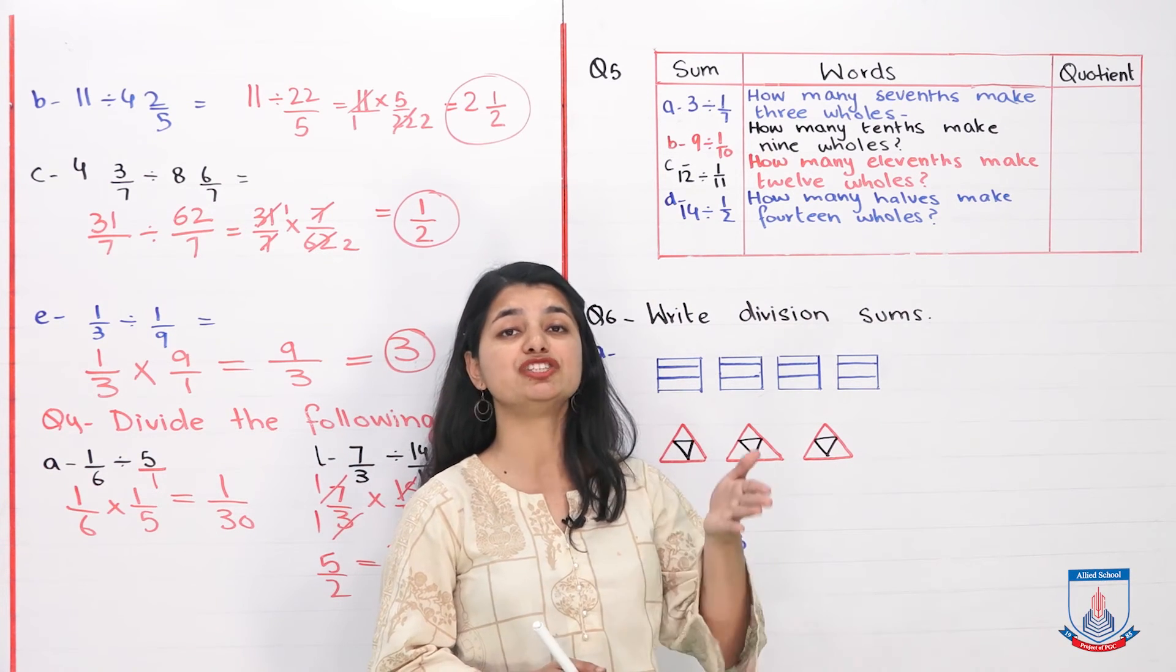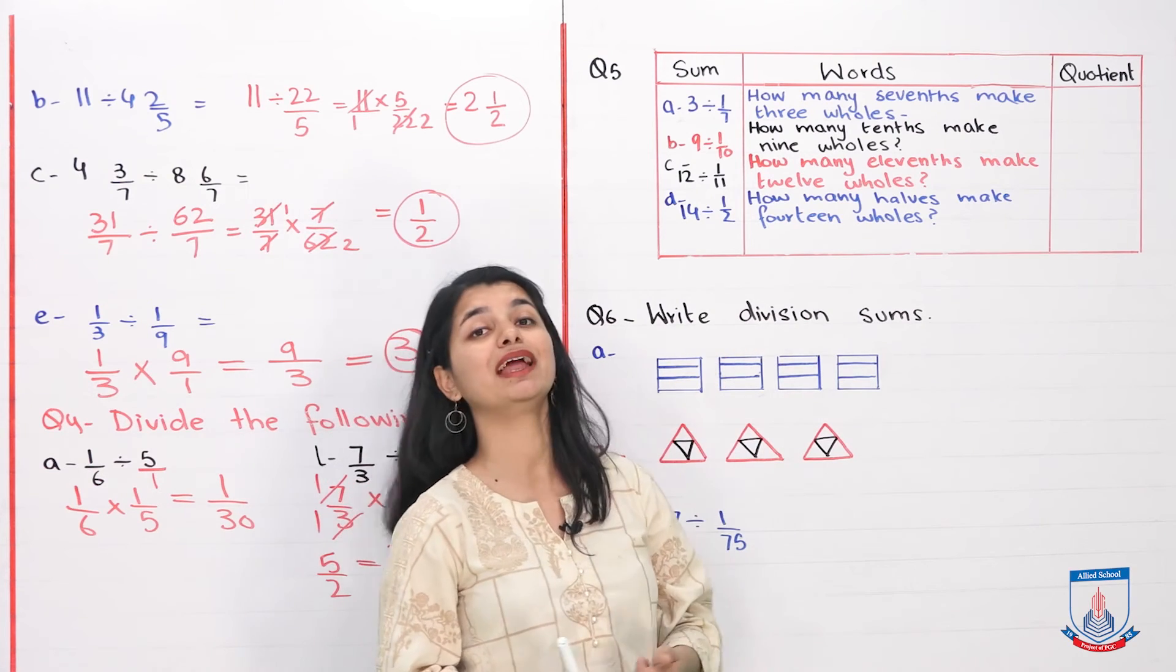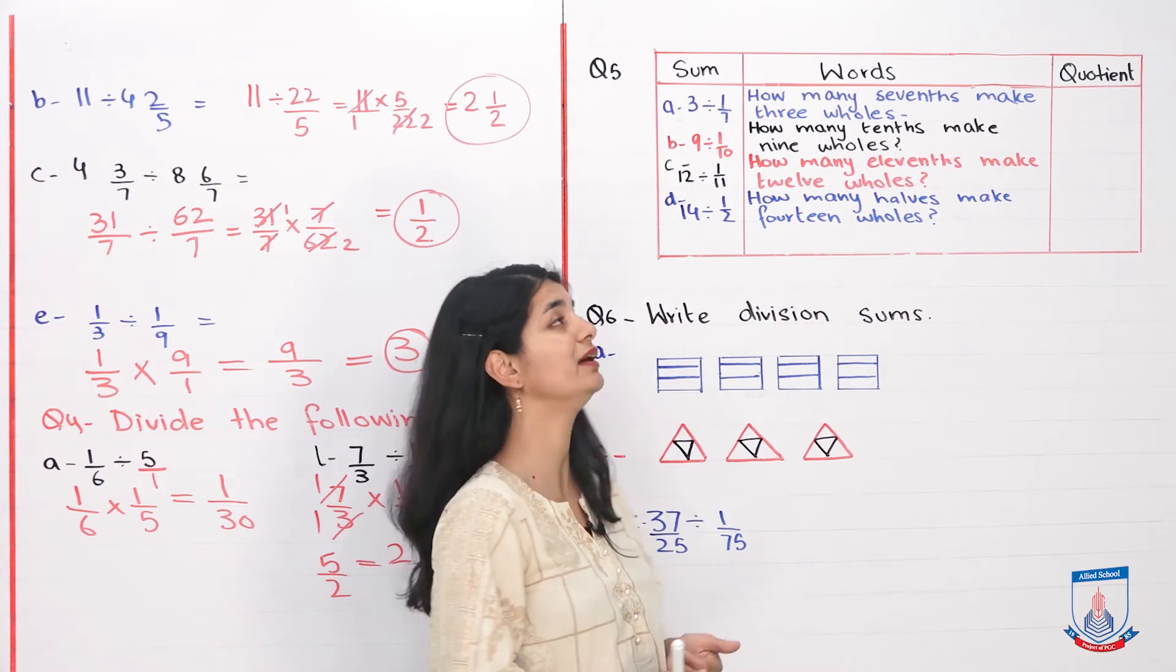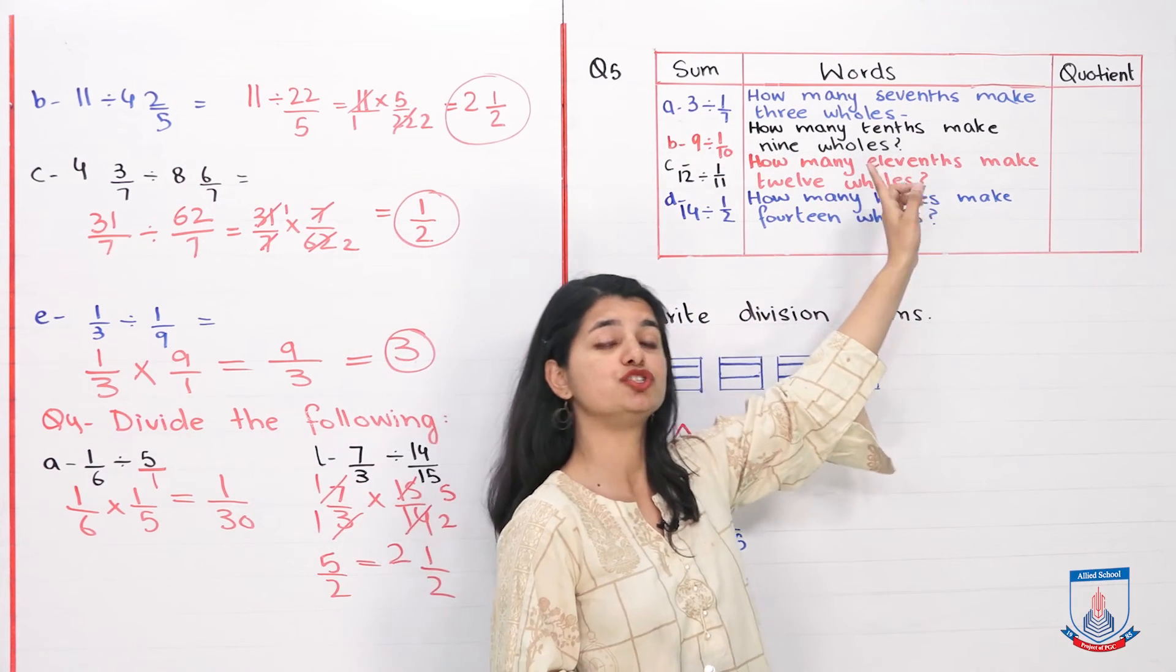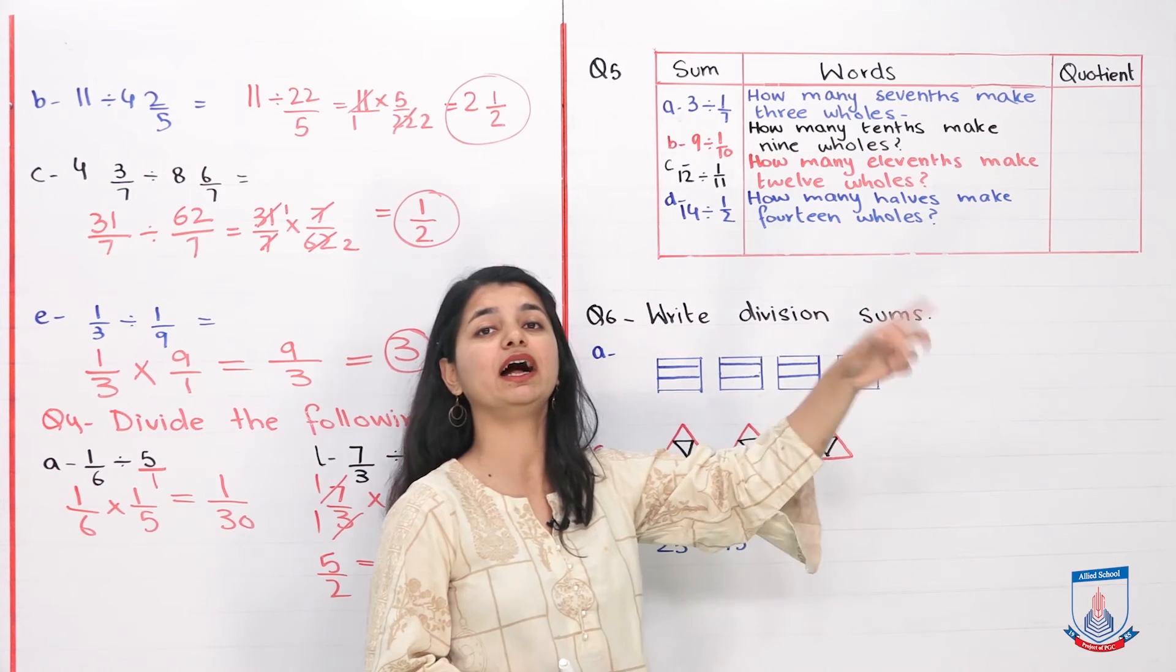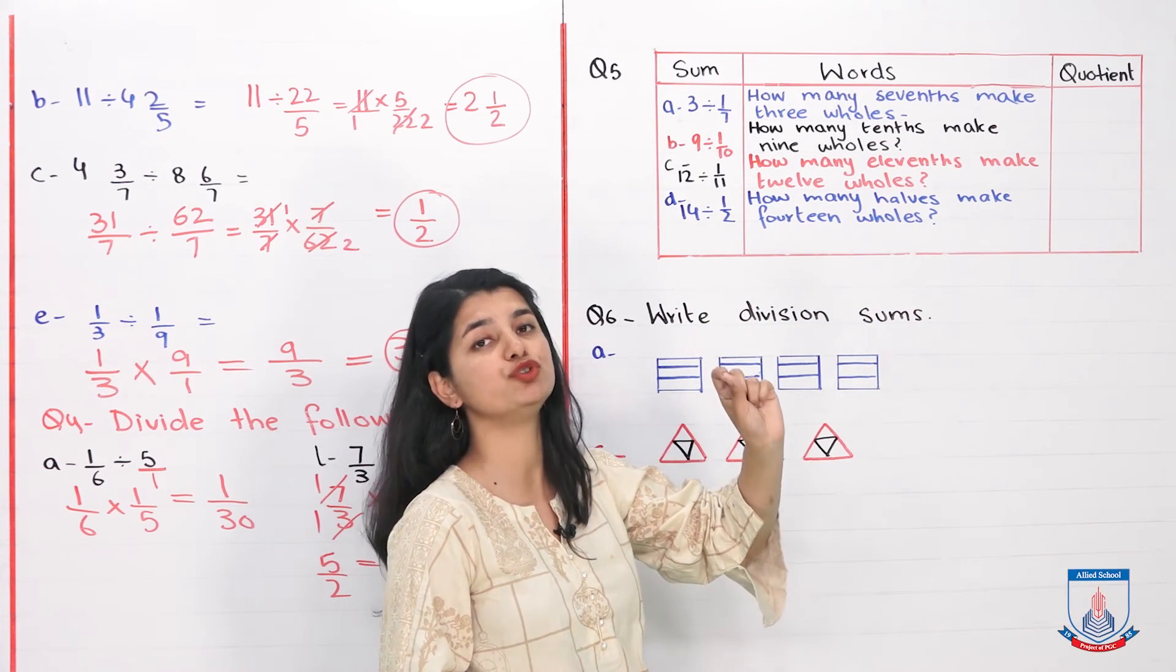Using that phenomenon, where one by seven is written, that's called seventh. So we will say how many sevens make three wholes? The whole number given comes at the end, and the parts you write at the beginning.